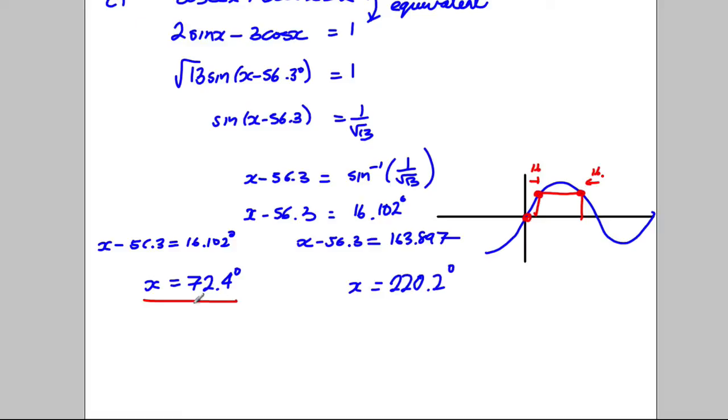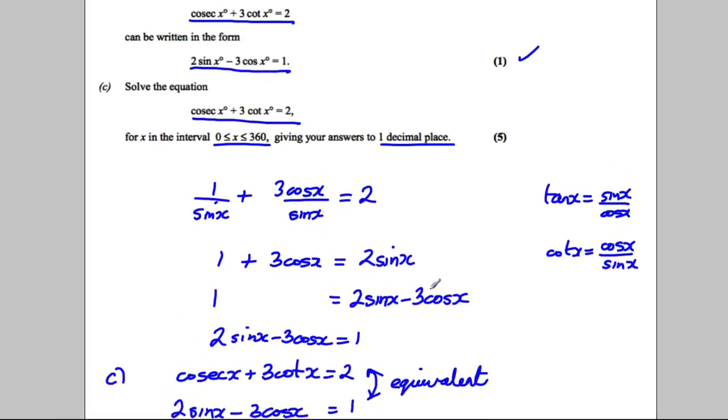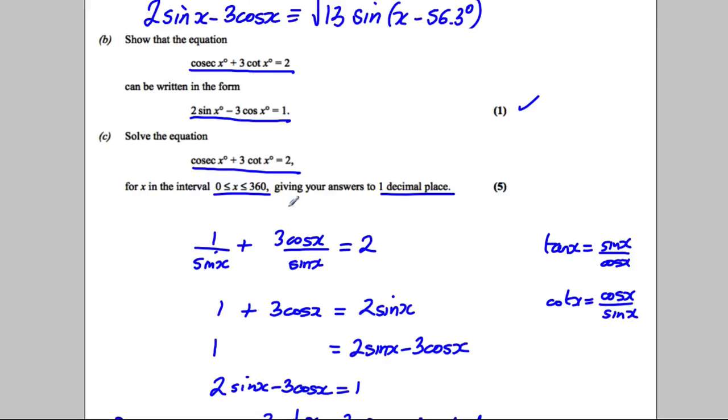So there are two answers: x is 72.4 and 220.2. They're both within the region that we want and they're both to one decimal place. So we're done.